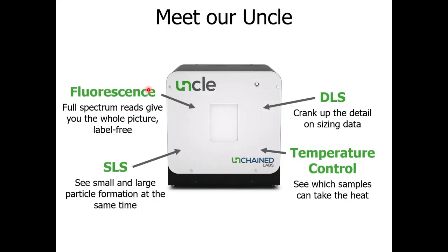UNCLE combines three measurement modalities — fluorescence, static light scattering, and dynamic light scattering — in a temperature-controlled environment. In terms of fluorescence, we excite fluorescence using a UV laser and a blue laser, and then we record the full emission spectrum. That's how UNCLE can be flexible and can be used to study both protein-intrinsic fluorescence and fluorescence of a reporter dye, like SYPRO Orange. Static light scattering is a function of molar mass, so by monitoring the static light scattering signal over time or over temperature, we can assess when aggregation is proceeding and define an aggregation temperature.